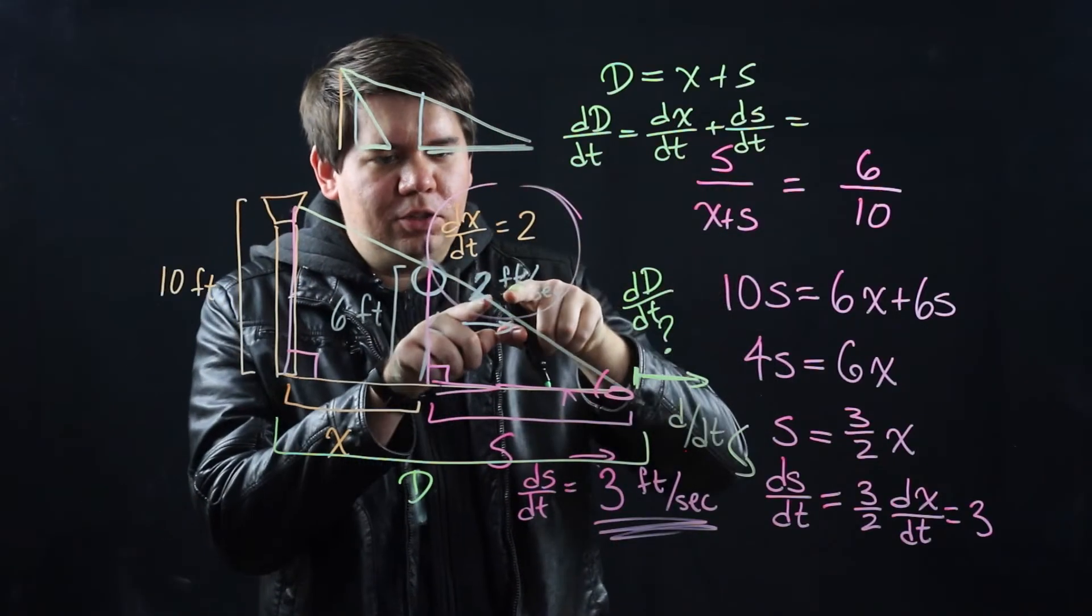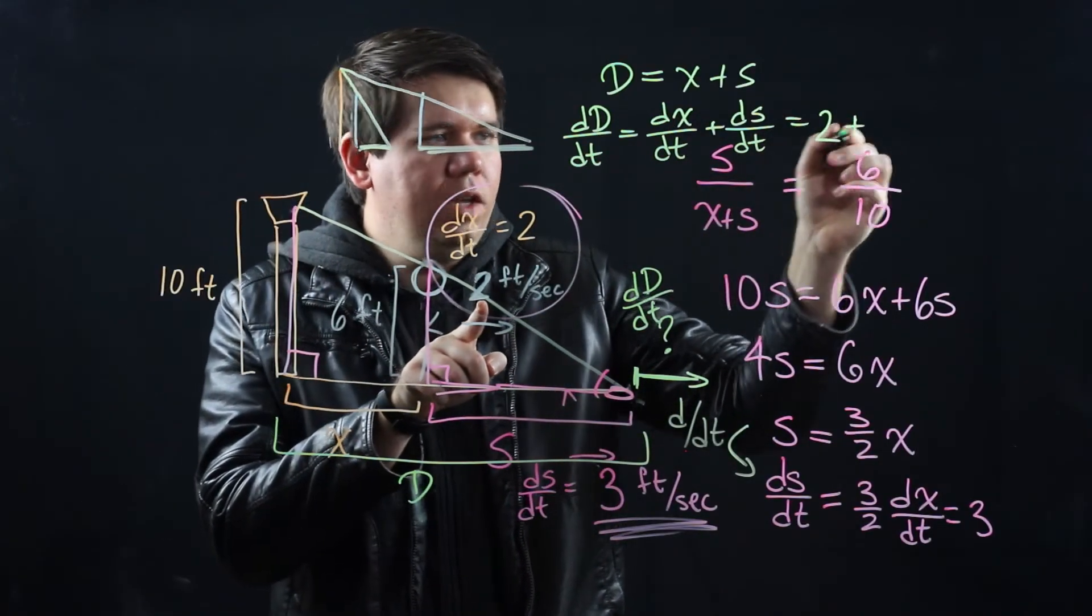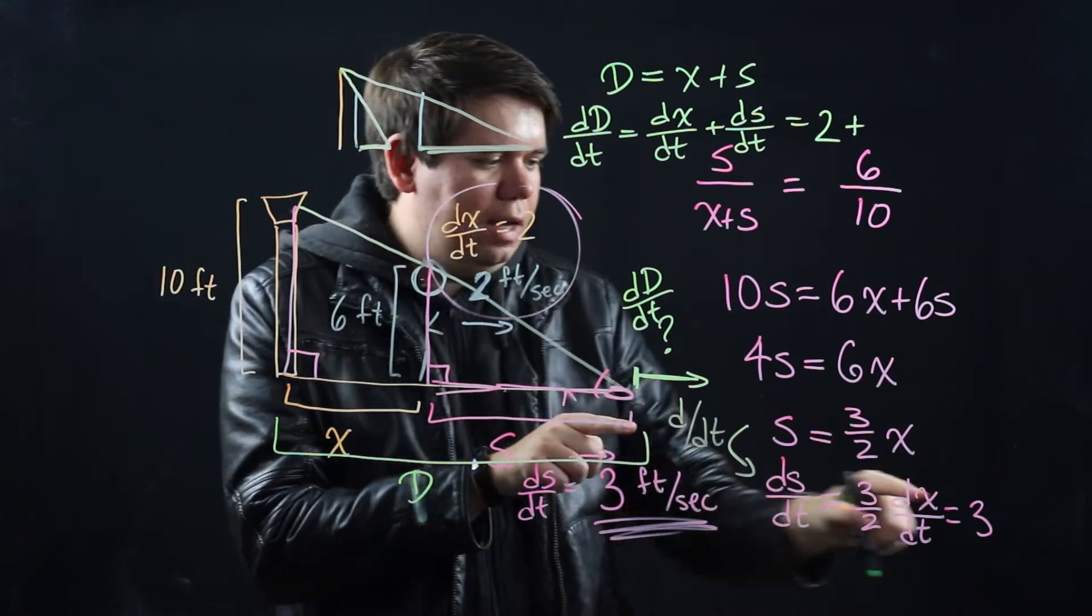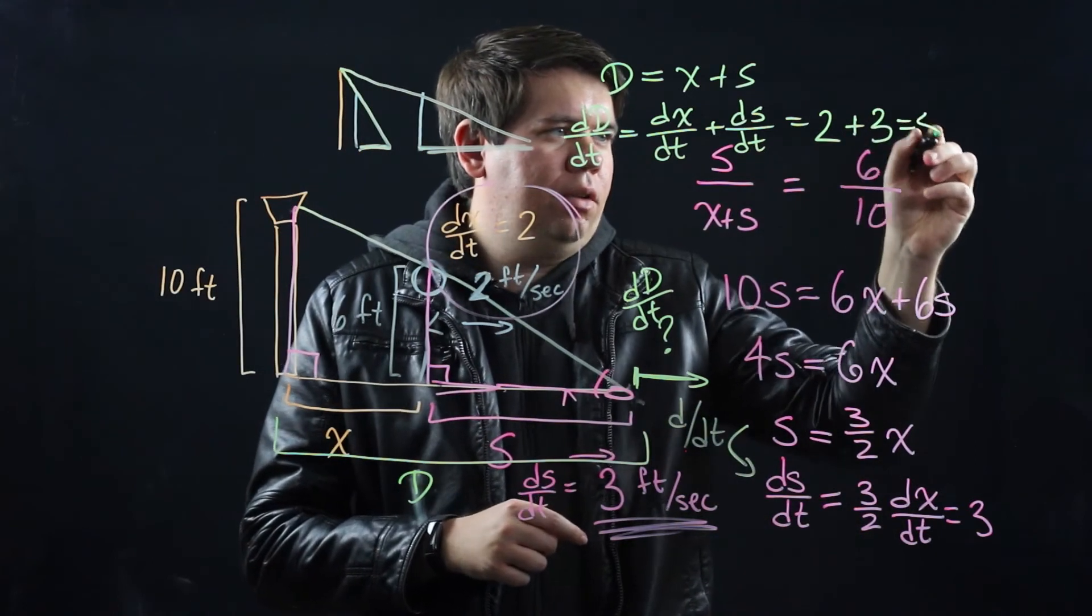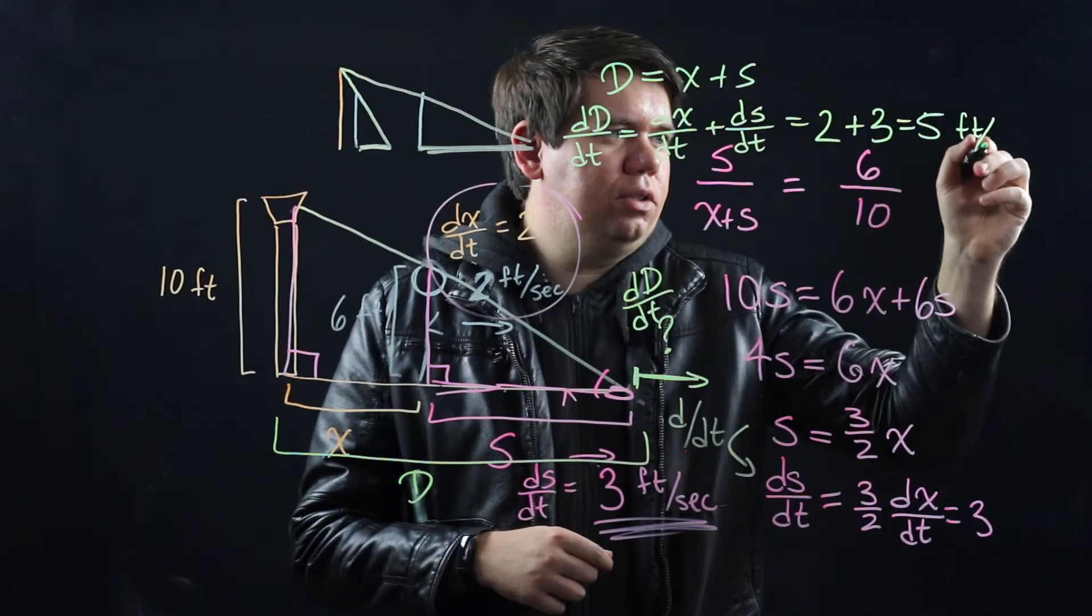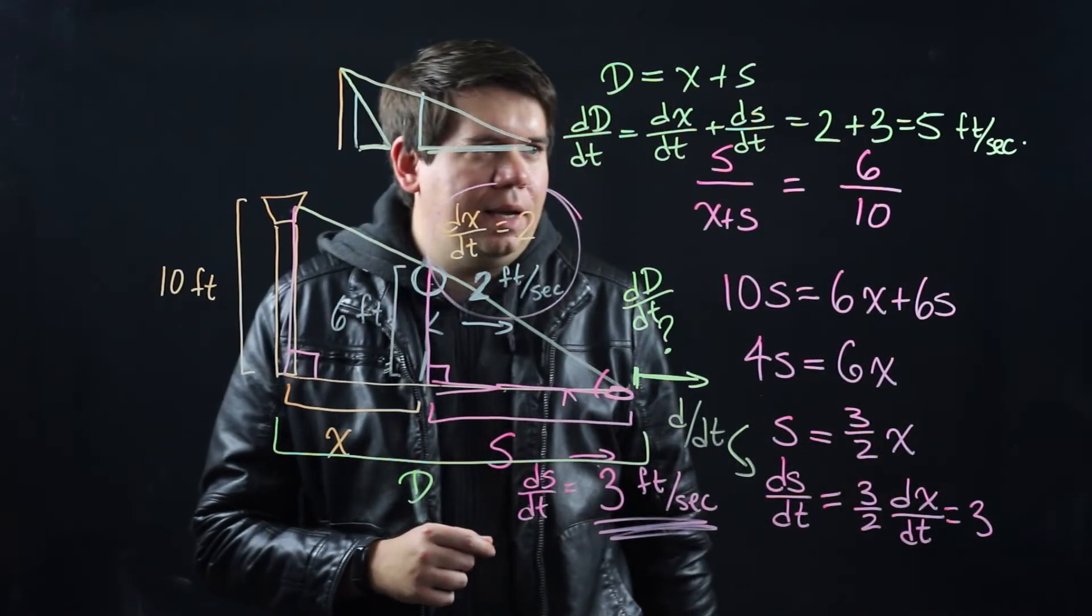Our x was given to us, the change in x over time is 2. The change in our shadow length over time is 3. So that total comes out to be 5, and our units are feet per second.